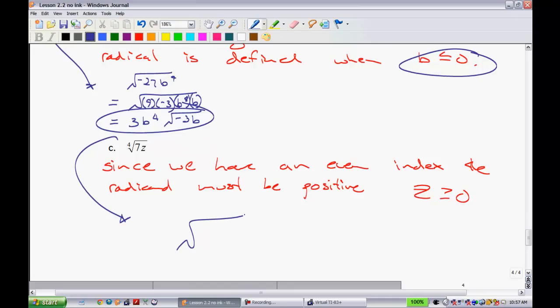Well, this one is kind of easy. You can't take the 4th root of 7 or z, so you just leave it right there. Beautiful thing. Okay, last one.